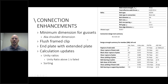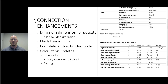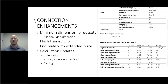In calculations, you're now going to see unity ratios displayed along with your limit states. That means we can sort those from lowest capacity to highest capacity. For those not familiar: any time you see a unity ratio above one, that's a failed connection that doesn't meet the design requirements.